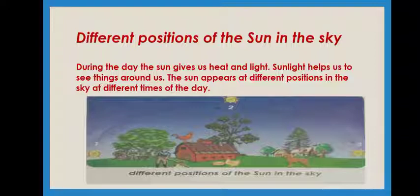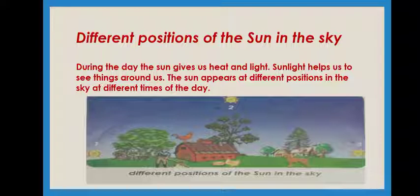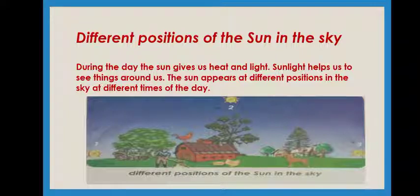Position number 1 shows that it's sunrise. The climate will be very cool and pleasant. Position number 2 is afternoon — very bright and shiny sun. Position number 3 is sunset or evening. Again, very pleasant climate, isn't it?